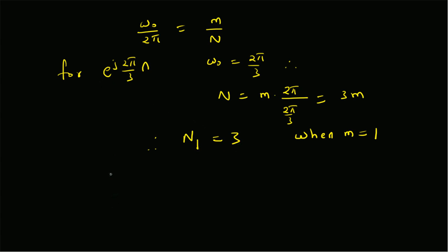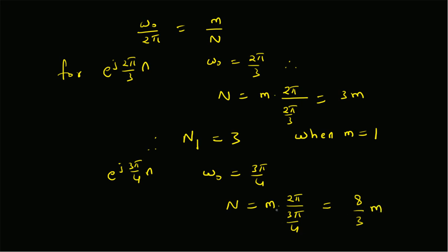For the second component e^(j·3π/4·n), the frequency ω₂ = 3π/4. So N = m·(2π / (3π/4)) = (8/3)m. The minimum integer value occurs at m = 3, giving N₂ = 8. So the fundamental period of the second component is 8.